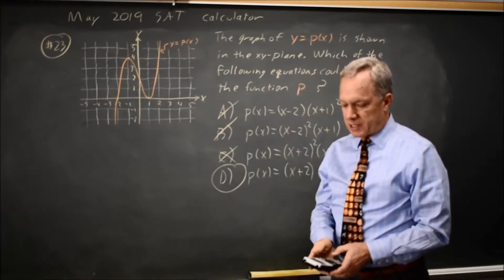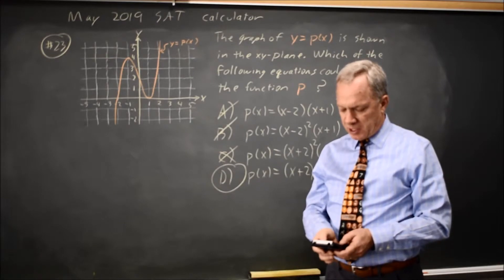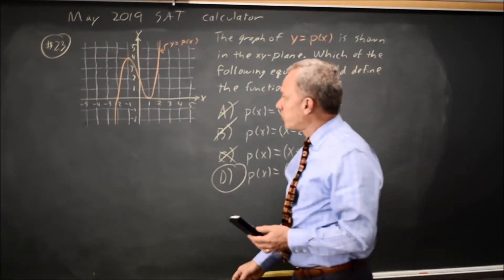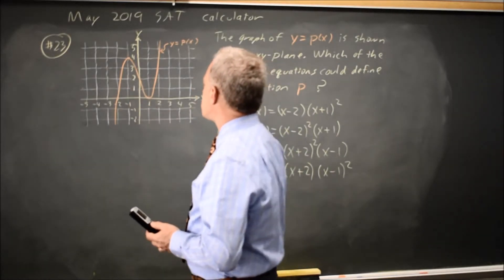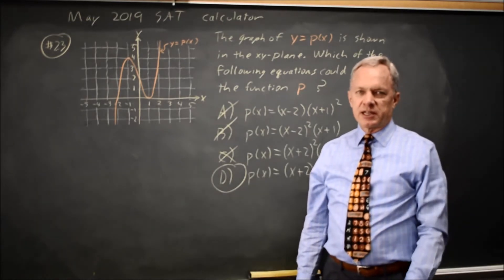And we can check that by entering choice D into y equals, which does not take very long. And then hit graph in the standard window. And we'll find that we cross through negative 2 and just touch at x equals positive 1. So choice D is the correct answer.